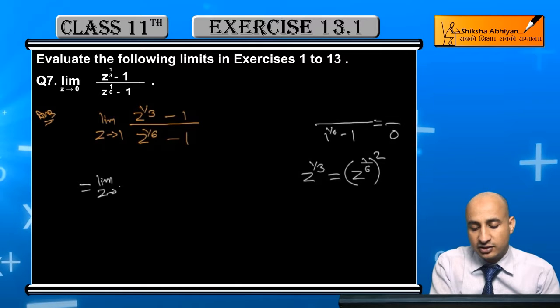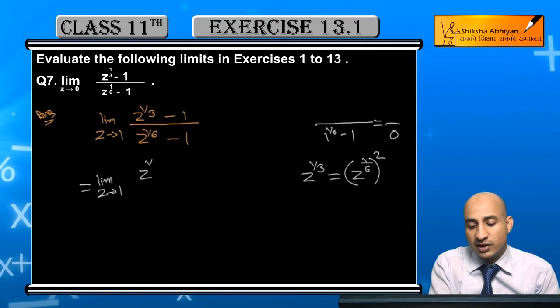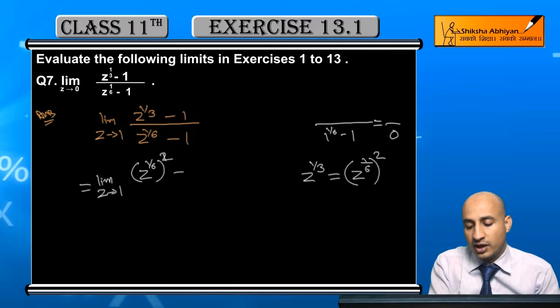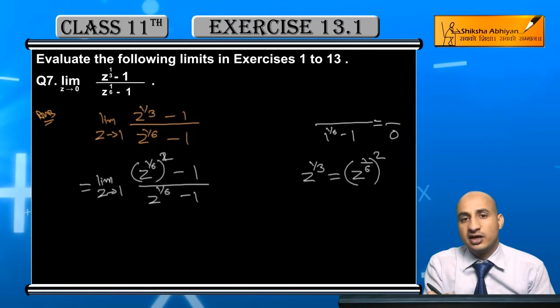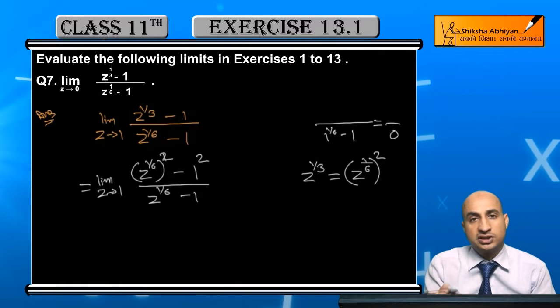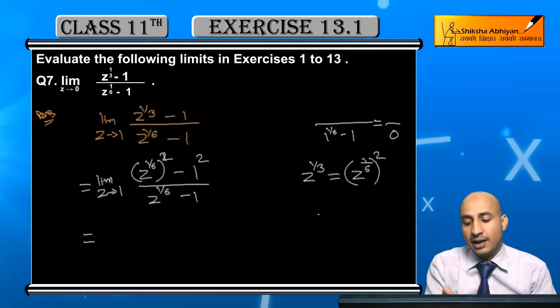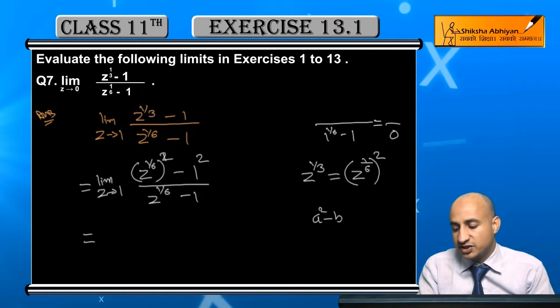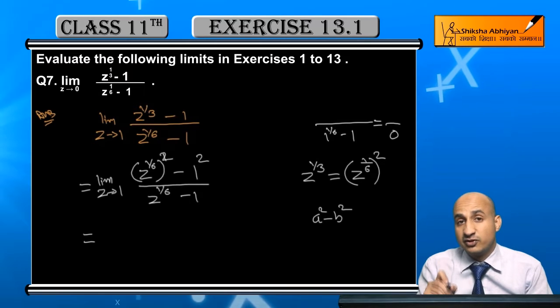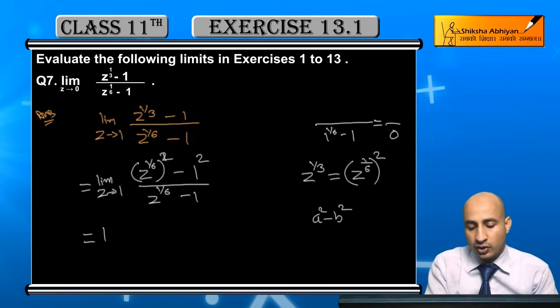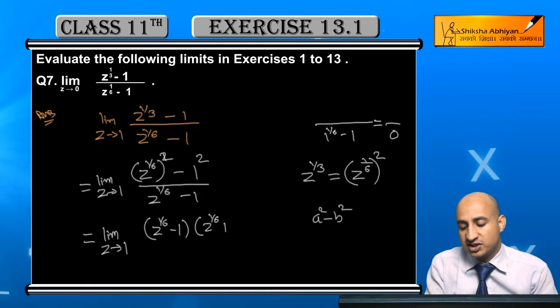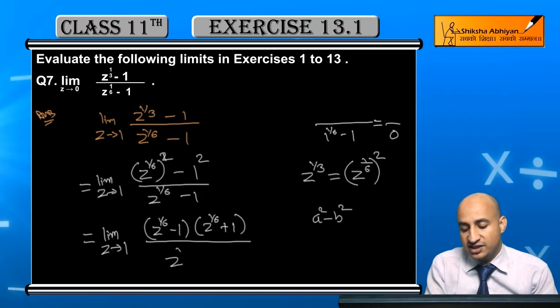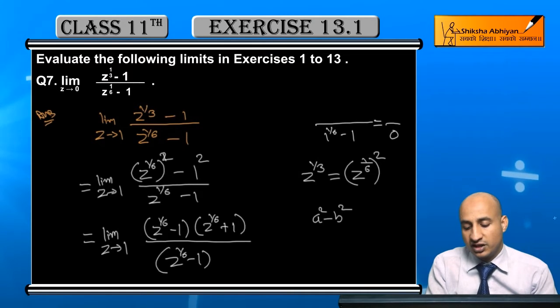Z to the power 1/6 square minus 1 upon z to the power 1/6 minus 1. Using a squared minus b squared formula, a squared minus b squared equals (a plus b)(a minus b). Z to the power 1/6 plus 1, neeche aap dekhenge z 1 by 6 minus 1. Yeh dono divide ho jayega.